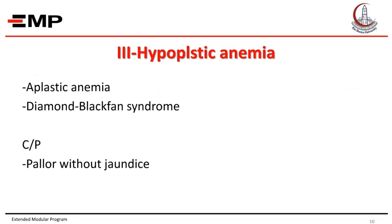Number 3: hypoplastic anemia. Hypoplastic anemia may be aplastic anemia or a congenital cause called Diamond-Blackfan syndrome. In hypoplastic anemia, there is depression of the bone marrow. The clinical picture is pallor without jaundice.